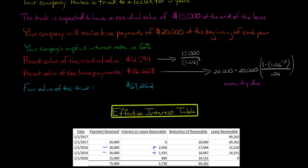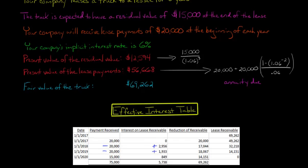When the truck is returned, we debit inventory and so forth. Multiplying $14,151 by 0.06 gives us $849 of interest. The net between $15,000 and $849 is $14,151, which when subtracted from $14,151 gives us zero — we no longer have a lease receivable. Let me walk through the journal entries to make this clearer.